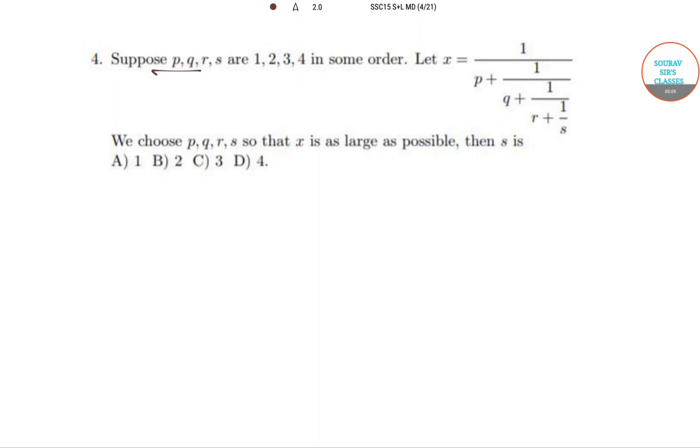So here p, q, r, s are 1, 2, 3, 4 in some order, like p equals 1, q equals 2, in that way. Let x equal this big function you can see is given, where p, q, r, s are there. All you have to do is we need to choose p, q, r, s so that x is as large as possible. So then what is the value of s? We can choose p, q, r, s in that way.